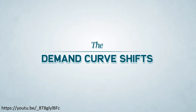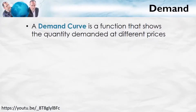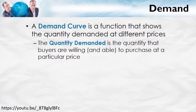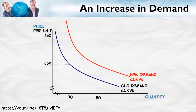In our previous videos we covered the basics of the demand curve. Now we dive into what happens when the demand curve shifts due to increases or decreases in market demand. A demand curve is a function which shows the quantity demanded at different prices, and the quantity demanded is the quantity that buyers are willing and able to purchase at a particular price. An increase in demand means a shifting out of the demand curve — a movement toward the northeast, away from the origin.